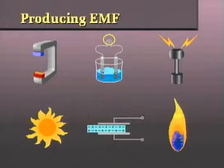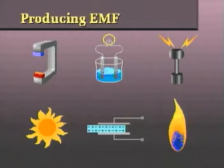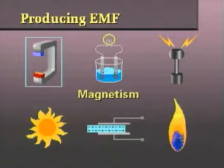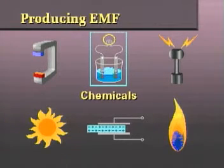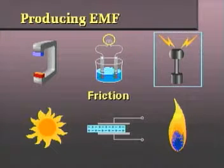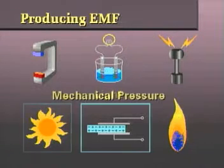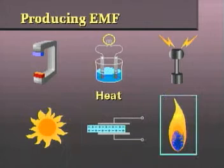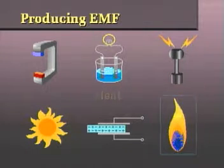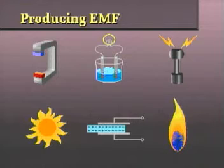This brings us to our second topic, producing EMF or voltage. There are six primary sources of EMF or electrical energy, including magnetic energy, chemical energy, the energy of friction, light, mechanical pressure, and heat produced EMF. Let's see how each of these primary energy sources can be used to produce an electrical difference in potential.